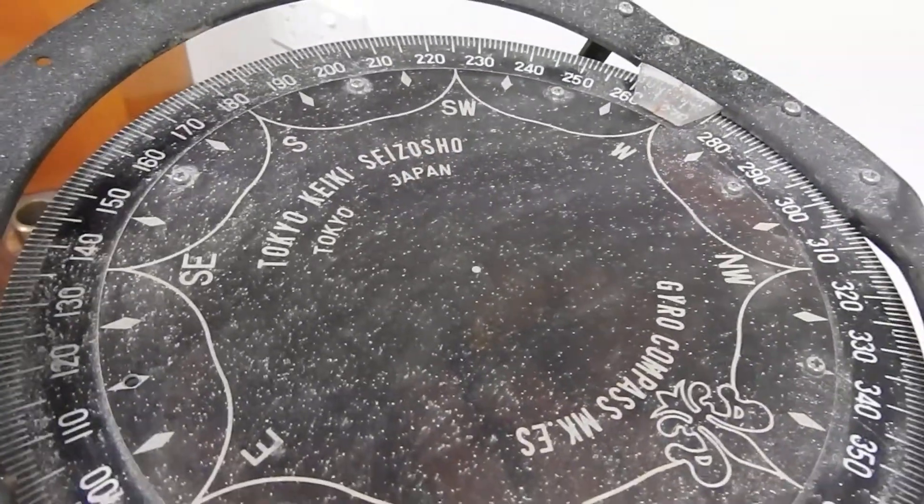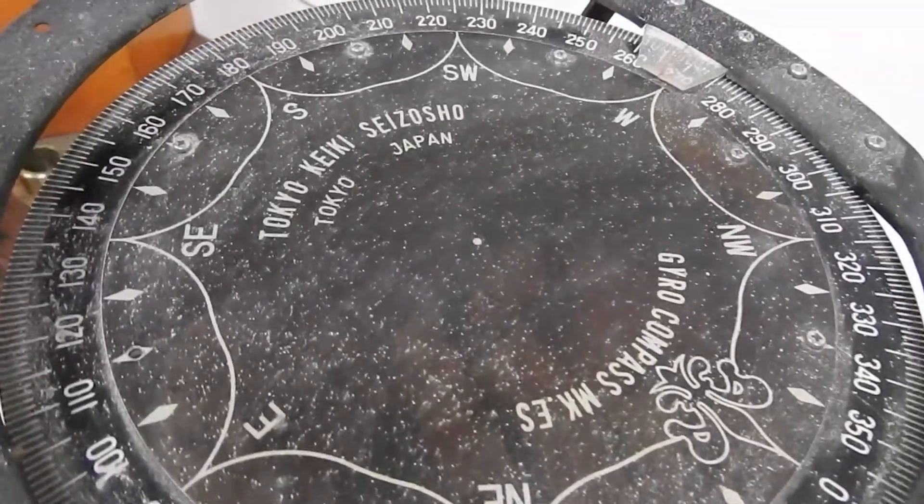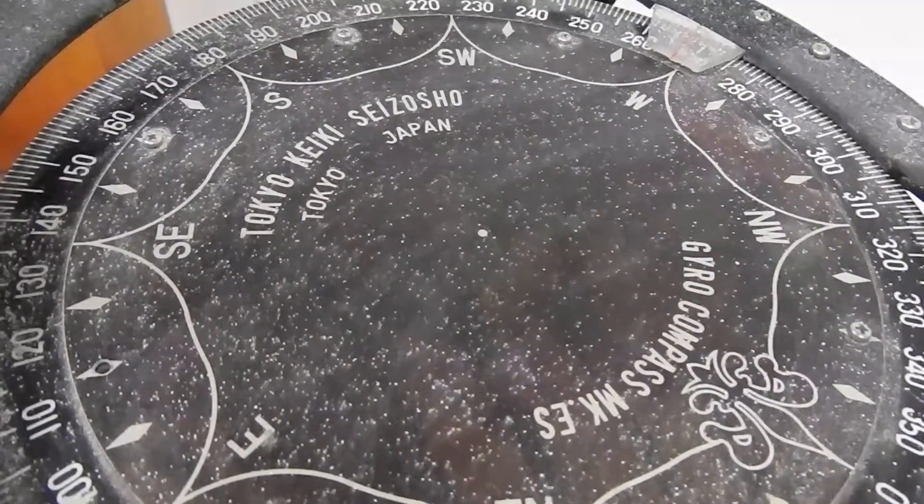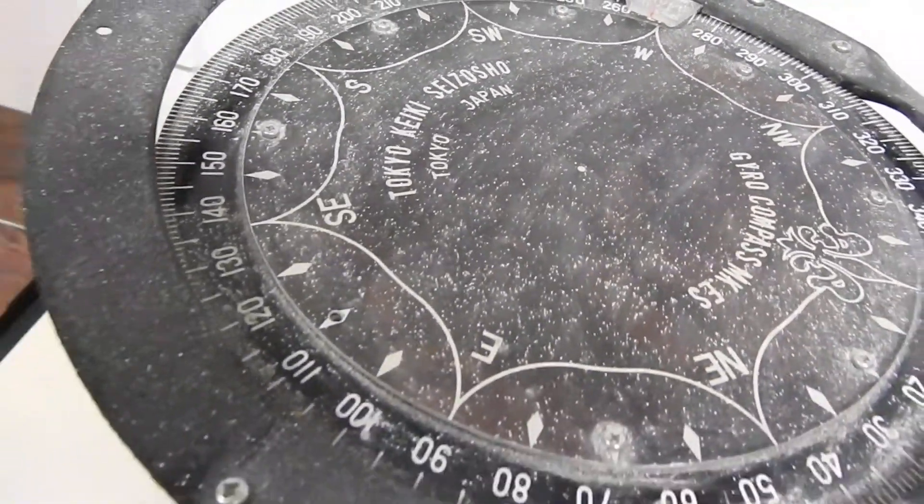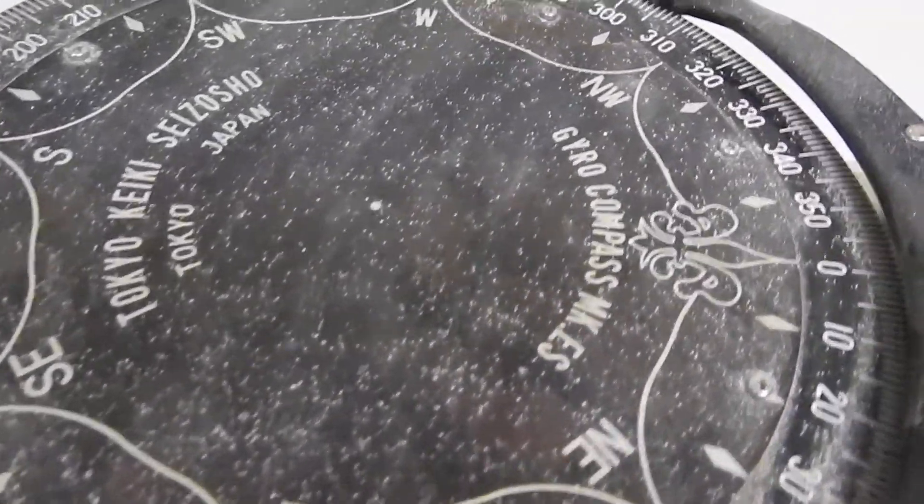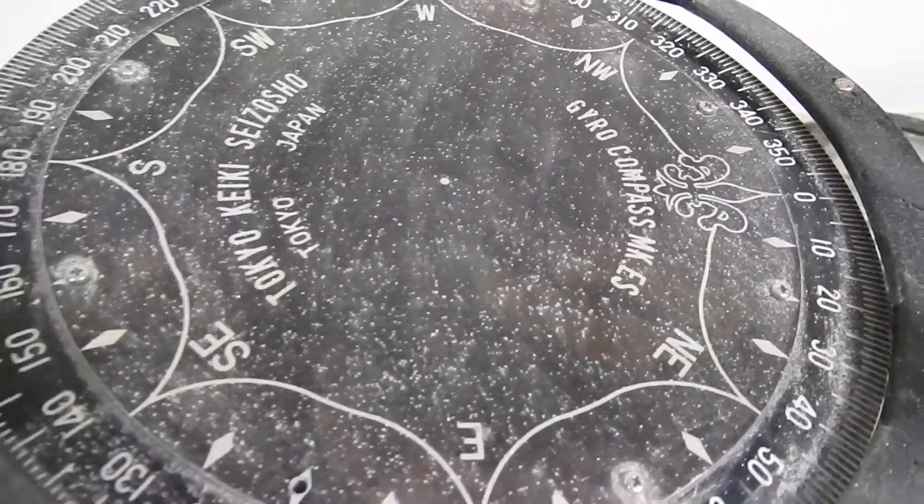Guys, with a lot of difficulty I have managed to get you to see a model of a gyro compass and what it looks like. It's not in a very good shape, but at least you will get a fair idea of what the inside of a gyro compass looks like.